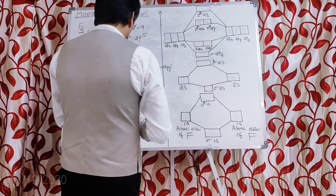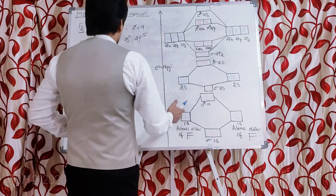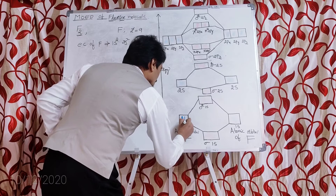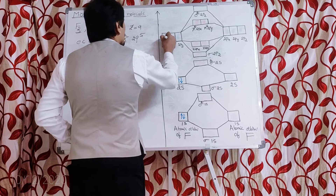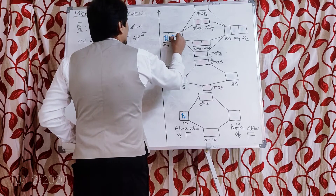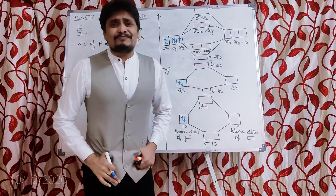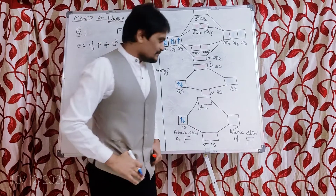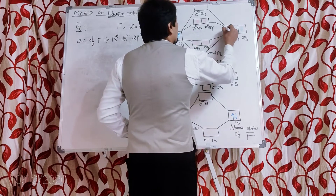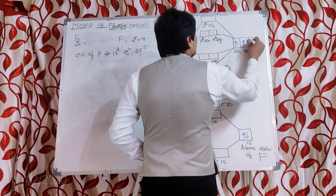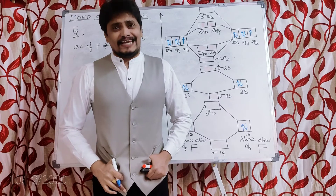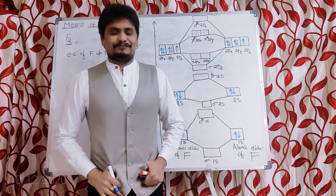Let us fill the electrons in the atomic orbitals first. Each fluorine atom has nine electrons, so we fill nine electrons into the atomic orbitals of one fluorine atom, and similarly fill nine electrons into the atomic orbitals of the second fluorine atom. We have now filled all the electrons in the two atomic orbitals of the two fluorine atoms.